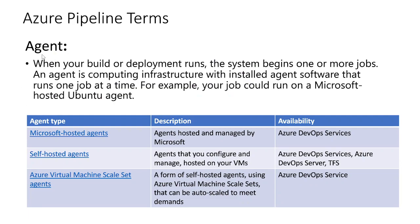Now let's look at these concepts one by one. First is agent. An agent is infrastructure for you to run all your jobs and perform all your actions. When your build or deployment runs, the system begins one or more jobs. An agent is a computing infrastructure with installed agent software that runs one job at a time — for example, a Microsoft-hosted Ubuntu agent. I'll show you in the Azure DevOps UI so you have a better understanding of what an agent is.